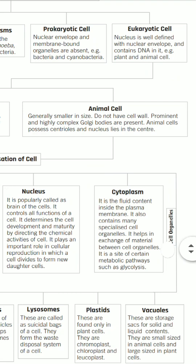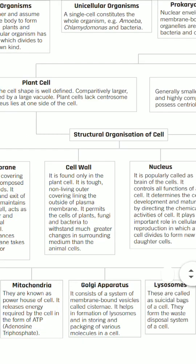Moving to animal cells: animal cells are generally smaller in size than plant cells. They do not have a cell wall. Prominent and highly complex Golgi bodies are present, and we discussed that Golgi bodies help the endoplasmic reticulum to make proteins. Animal cells possess centrioles, and the nucleus lies in the center of the cell.